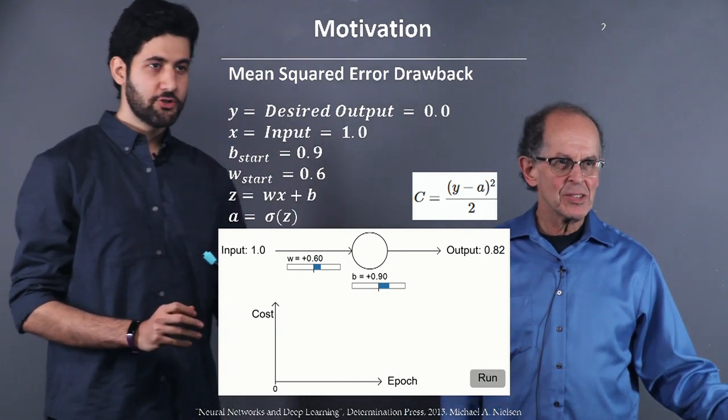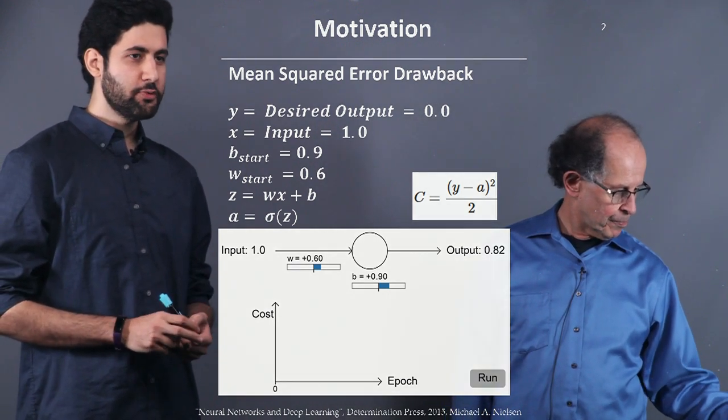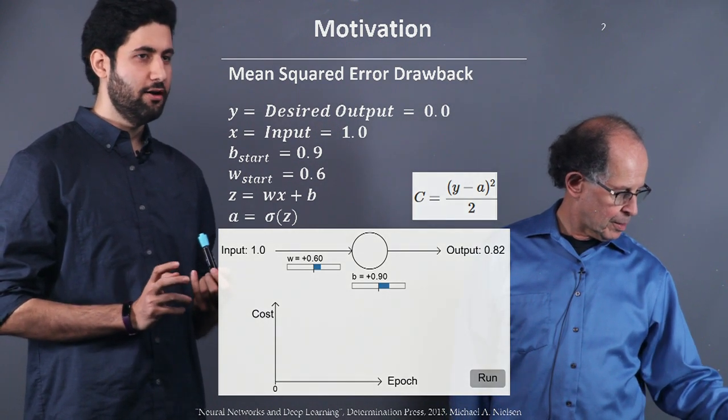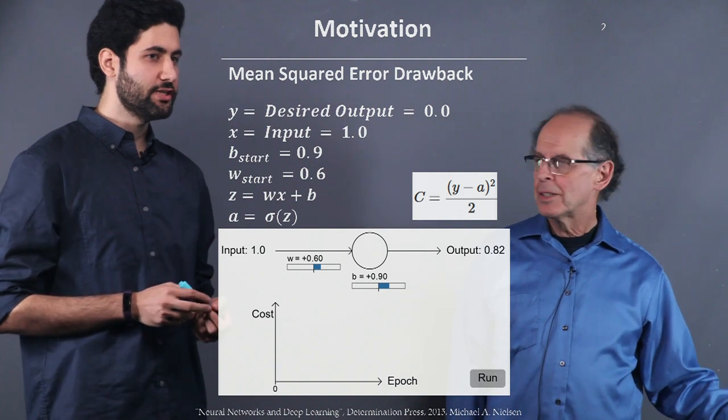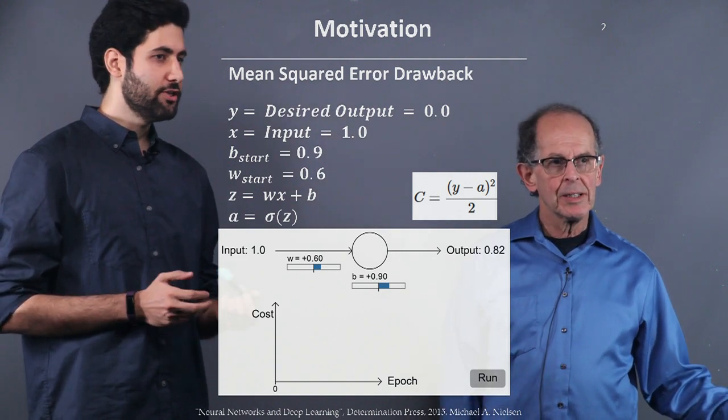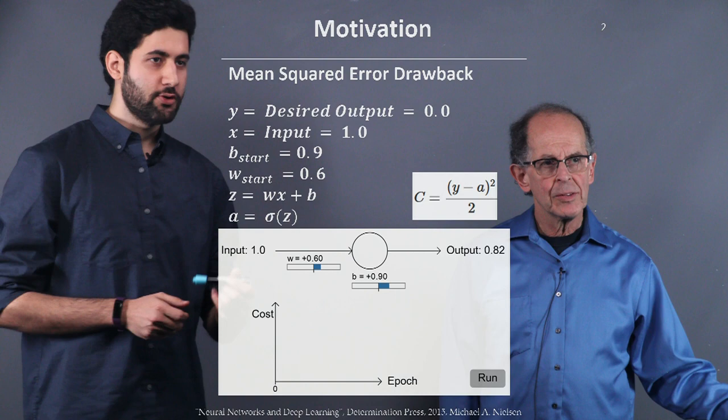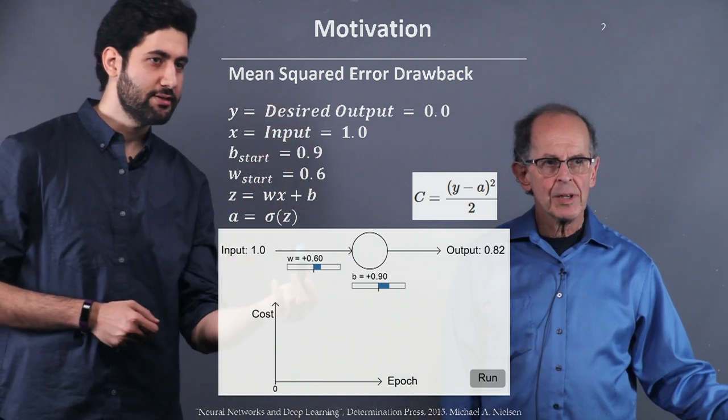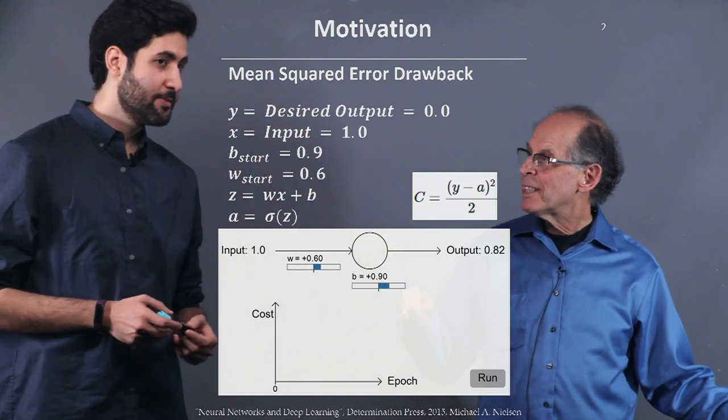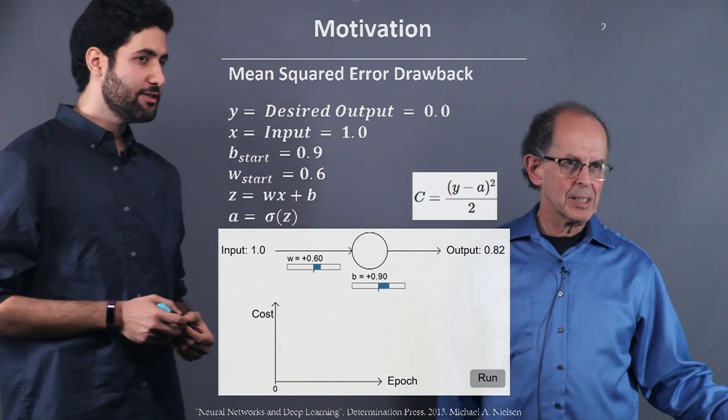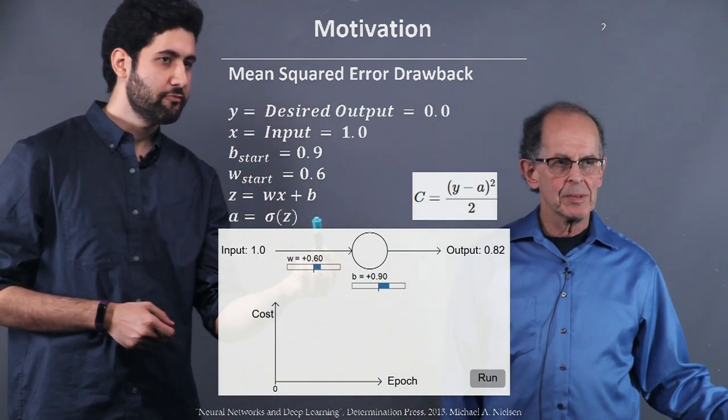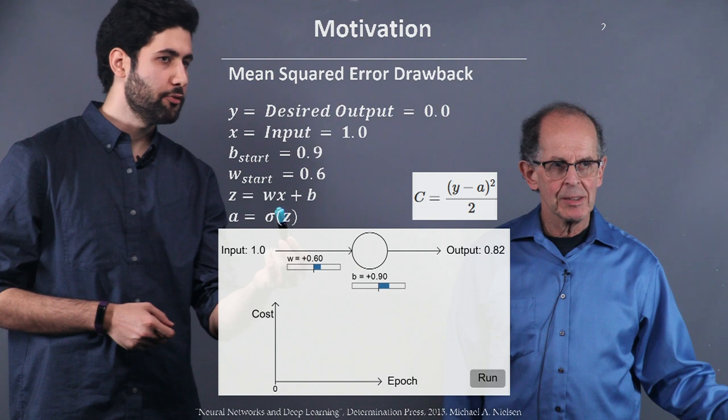Sure. So, basically, we have the same setup. We have the input, output, we have the activation function sigma, and we have a desired output. So, the same basic setup. You have a b now. We didn't have b before. Yeah. Actually, that's an easy extension. Now, we also have a bias. This term, which will be added by wx.